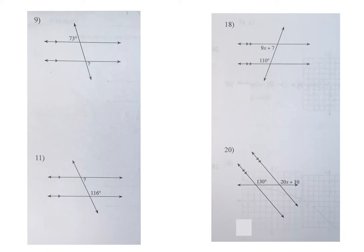If you have something like number nine here, what type of angle do you have? You have alternating exterior angles. So you should know alternate exterior angles are congruent, and you can answer this without any adding or subtracting whatsoever — you can just say that this is 73 degrees.